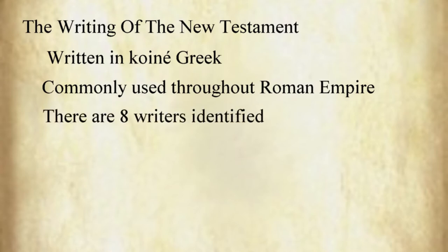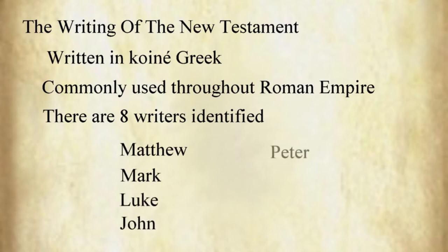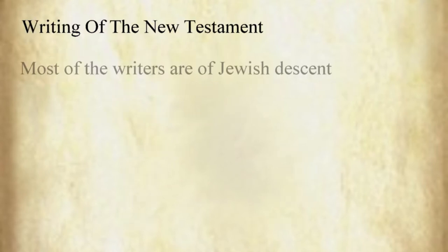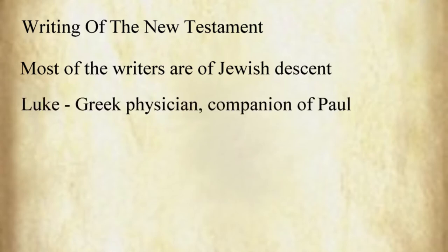There are eight writers identified, including Matthew, Mark, Luke, John, Peter, Paul, James, and Jude. Most of the writers are of Jewish descent with the exception of Luke, a Greek physician who became a companion of the Apostle Paul during his preaching trips.